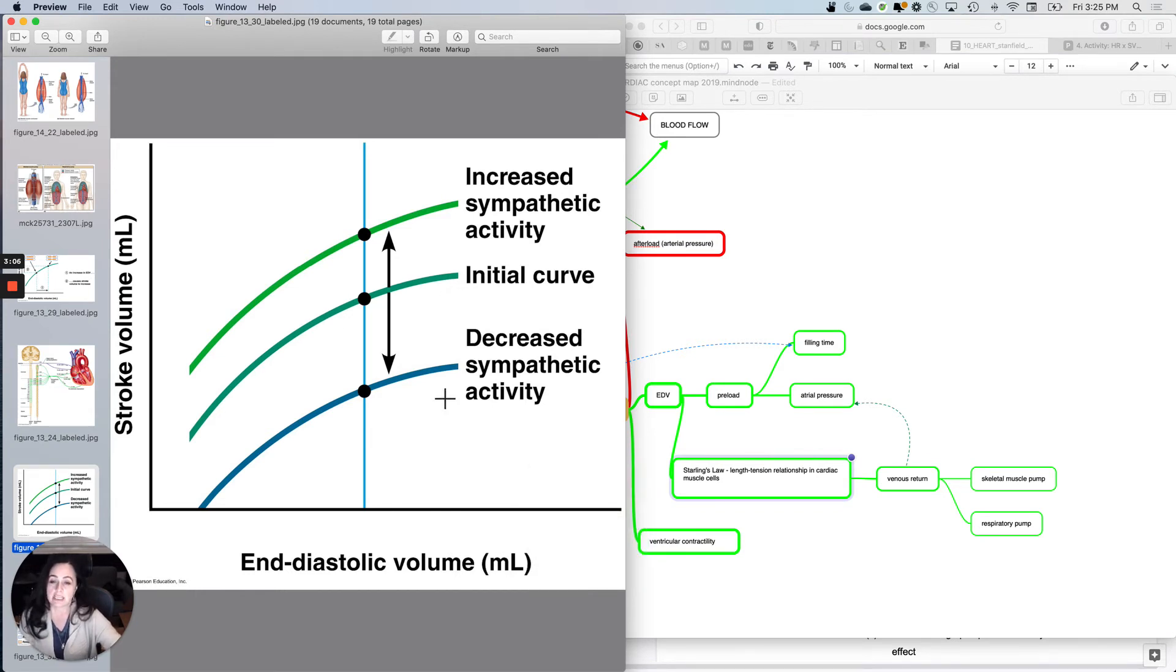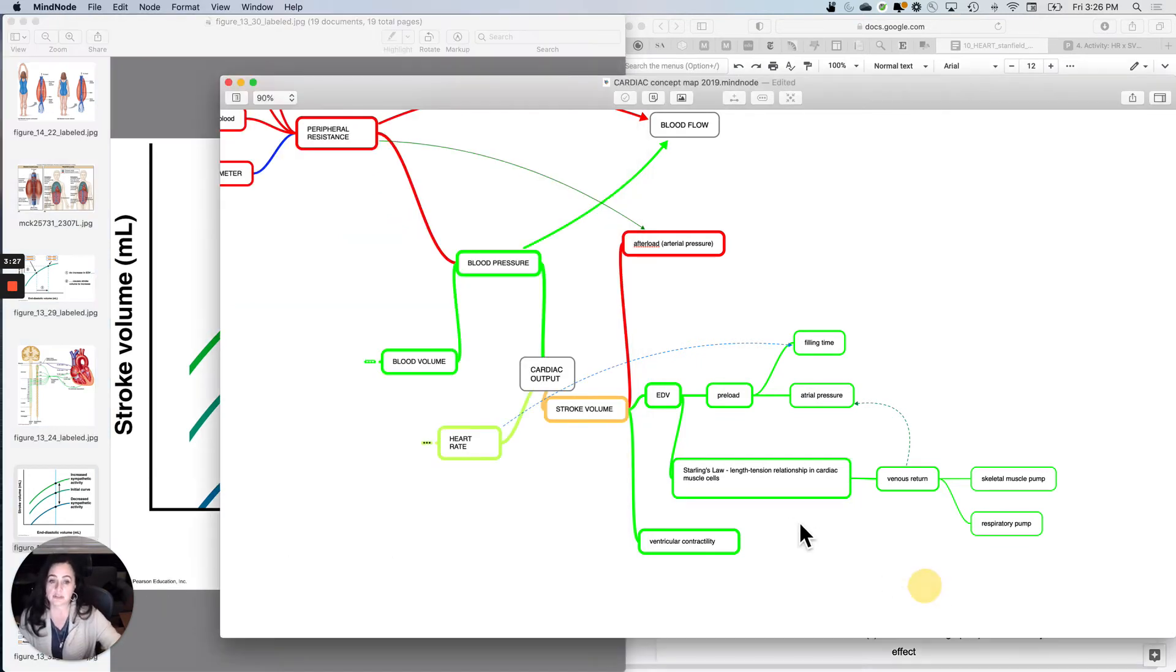If you decrease sympathetic activity, the stroke volume drops without changing the volume that's in the ventricles. But if you increase sympathetic activity, making the ventricles contract harder, then you will increase the stroke volume without changing the amount that was in there. It's just the amount that you're getting out by squeezing harder or not as hard.